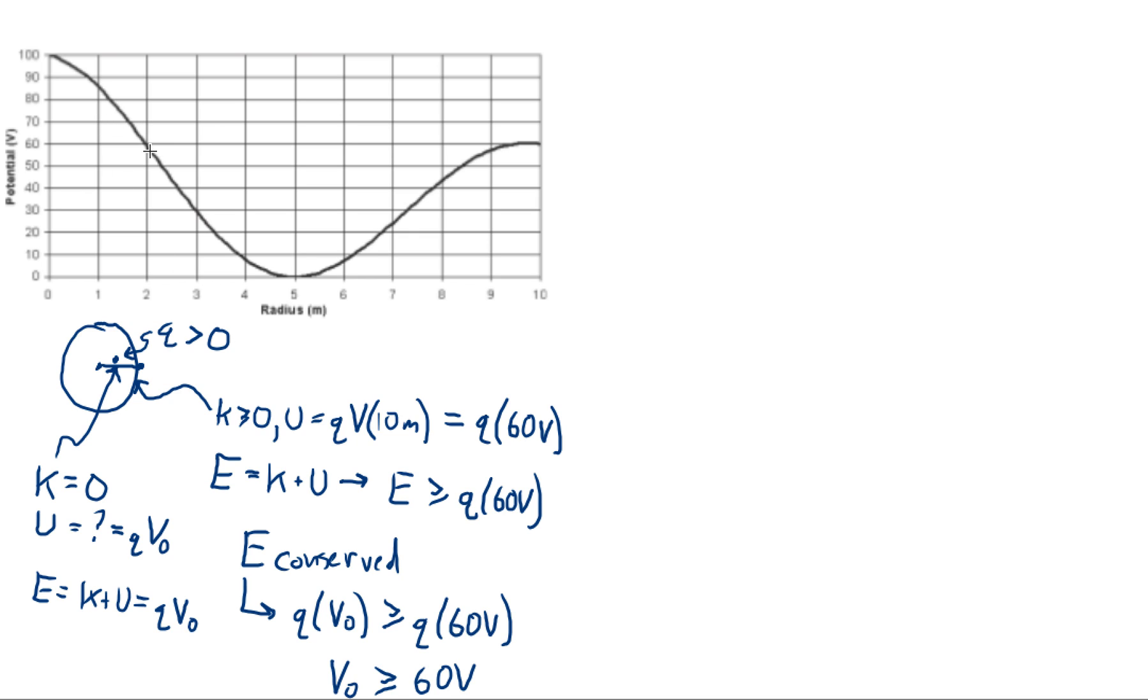It's released from somewhere inside, so I'm going to point to the initial spot here, and we're going to release it from rest. Because it says release from rest, it's going to have K equals zero. U equals question mark, but what we're going to say is U is going to be Q times V naught. And that means the initial mechanical energy, which is K plus U, is just going to be Q times V naught. This is a case where mechanical energy is conserved, so E is conserved. So what that tells us is Q times V naught has to be equal to, well, that's going to be our initial mechanical energy, that has to be greater than or equal to Q times 60 volts.